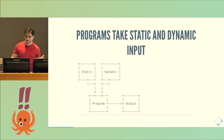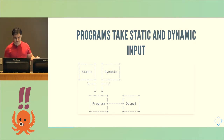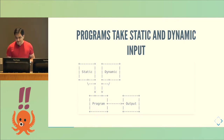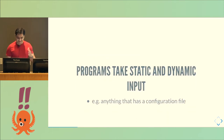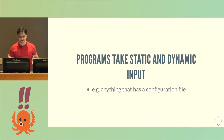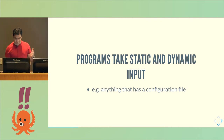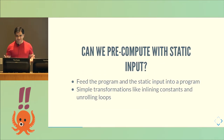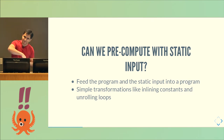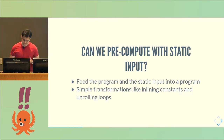You think of a program as taking static input and dynamic input. Static input is essentially known in advance, before the program starts executing. Dynamic input is only known once the program starts executing to produce some output. A favorite example of this is anything with a configuration file — VimRC, Emacs, web servers. Wouldn't it be cool if we could take the program and take the static input, jam it in, and do simple transformations like inlining constants and unrolling loops?